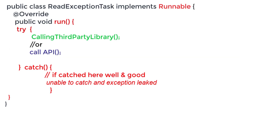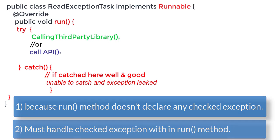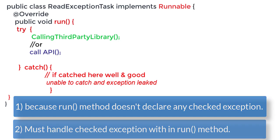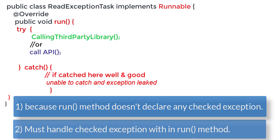Let's say you have a class called ReadExceptionTask which implements the Runnable interface and you write the run method inside it. Inside the run method we have a try-catch block, and we cannot throw any checked exception because the run method does not declare any checked exception. So we are forced to handle checked exceptions inside the run method only. If any exception occurs that cannot be caught there, it is considered a leaked exception and cannot be handled in the main method using a try-catch block. Let's jump into the coding to understand more.